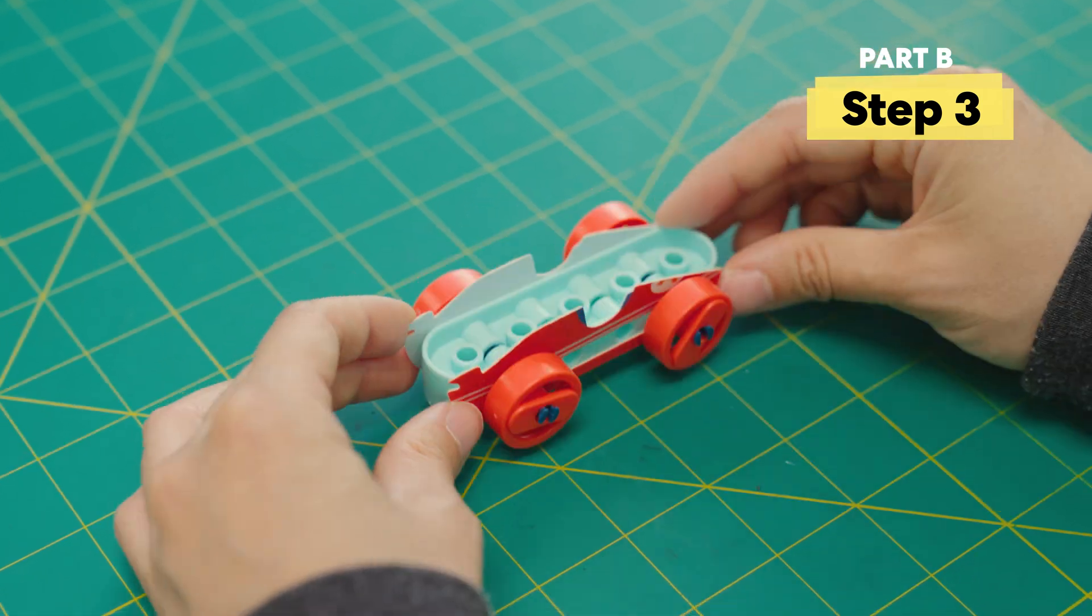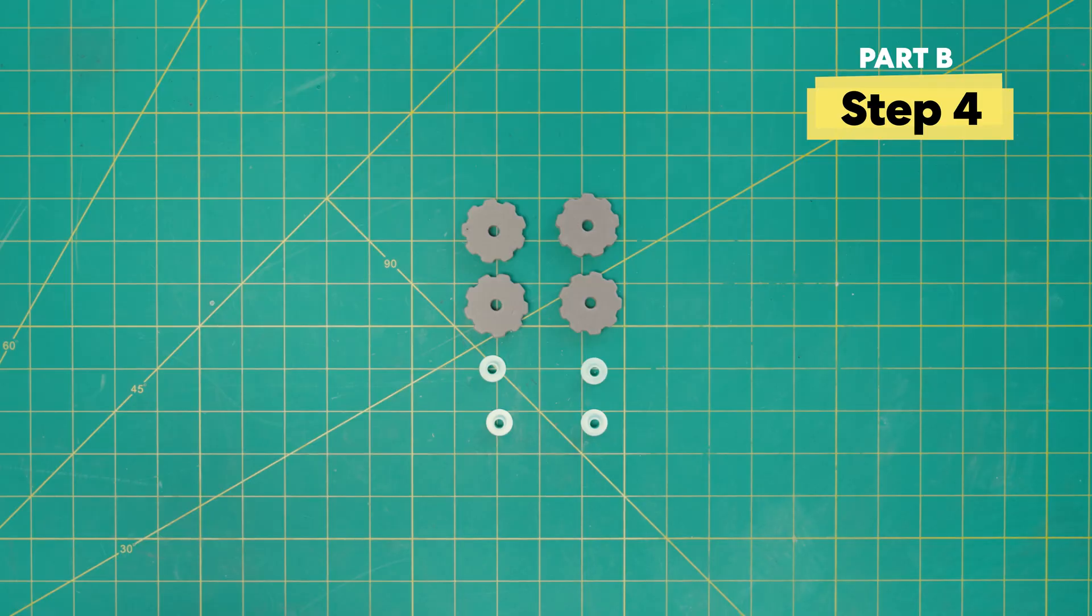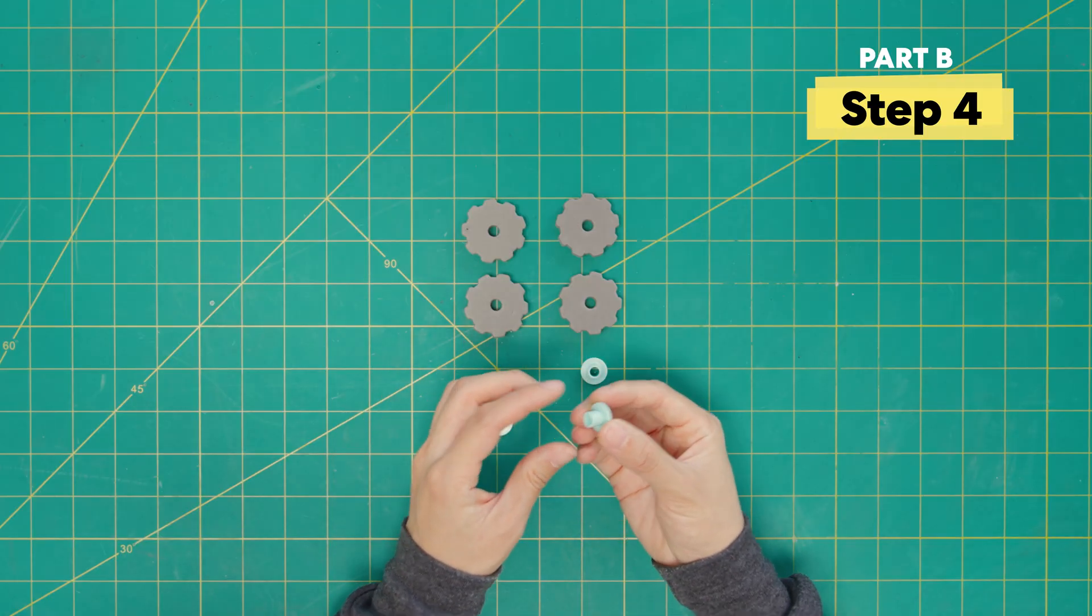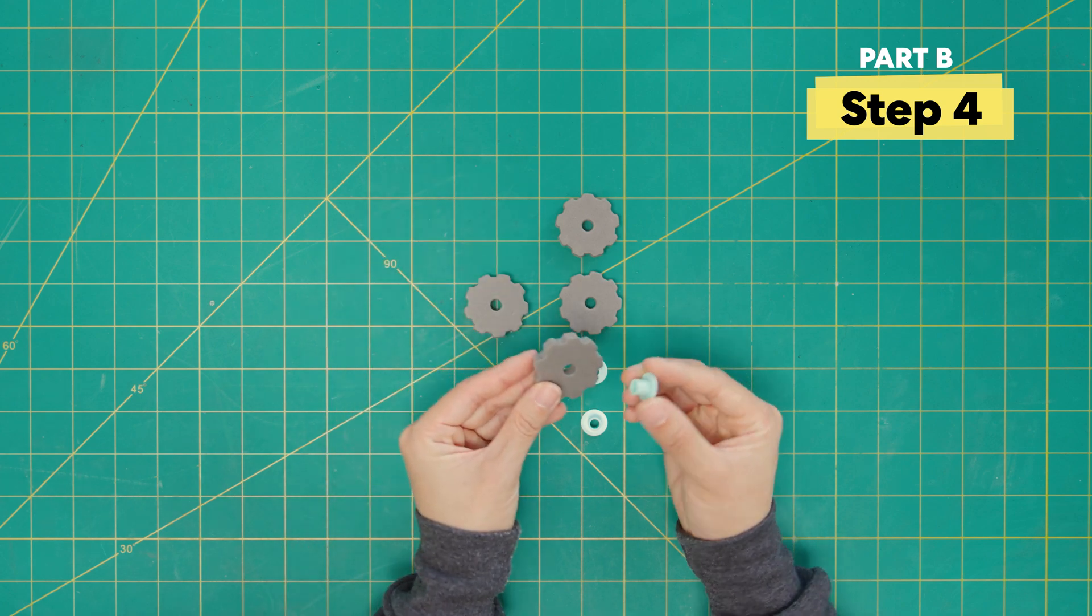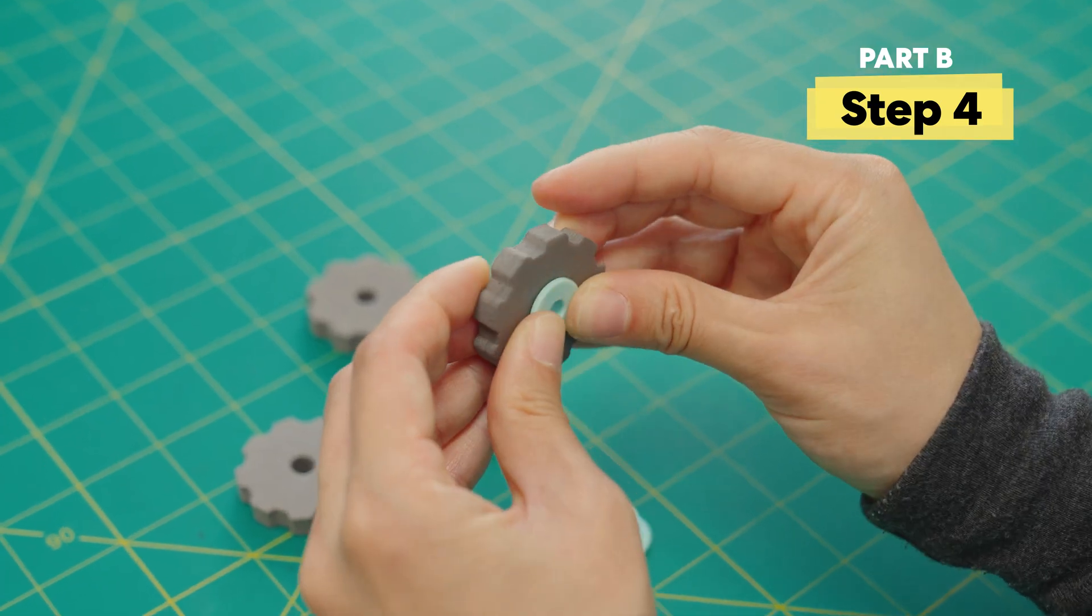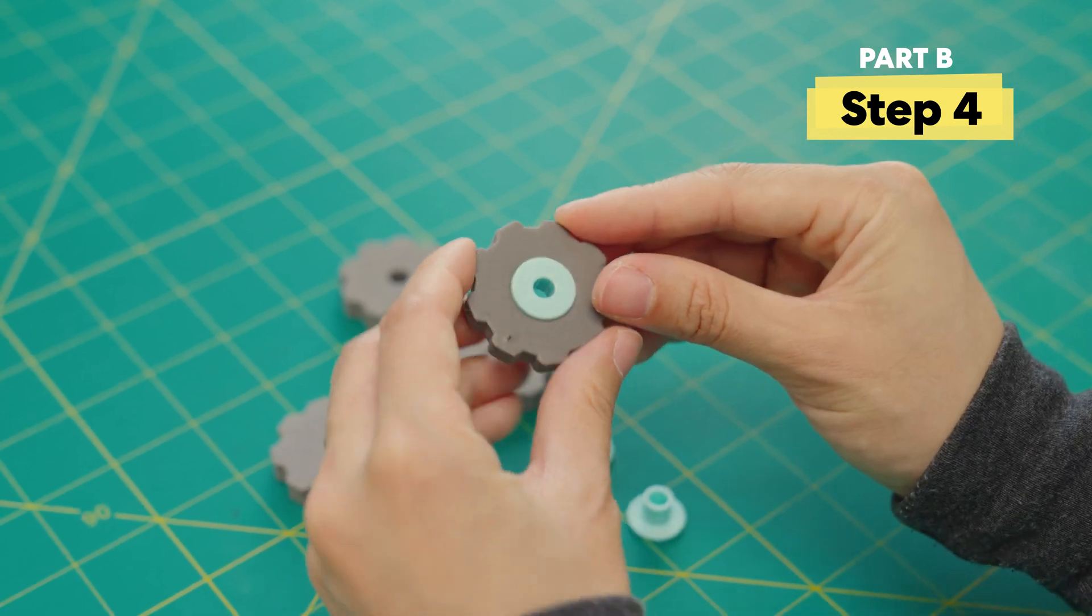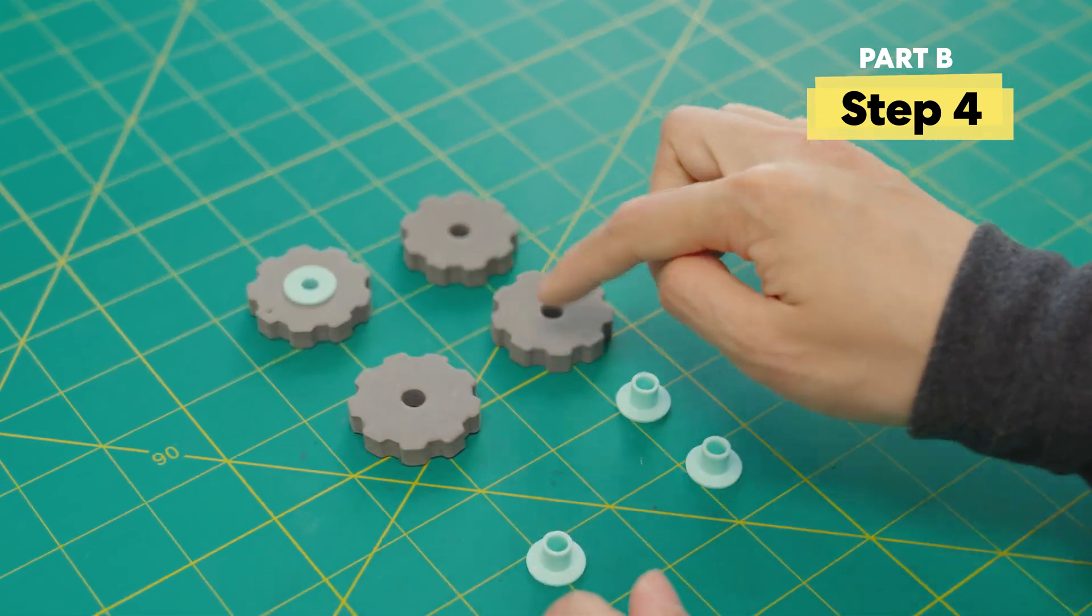Now that we've built one, let's build another type of car. First, combine these hubcap pieces with these large foam pieces. We're going to repeat four times to make four big wheels.